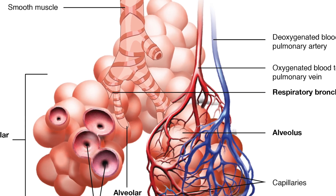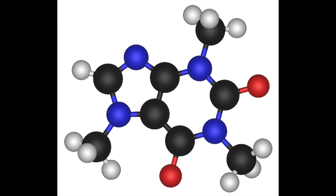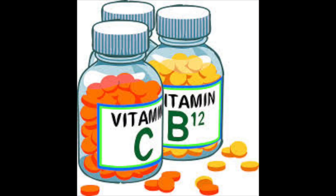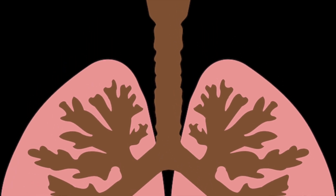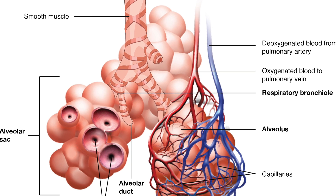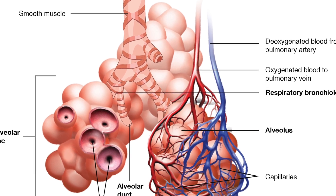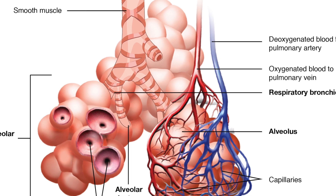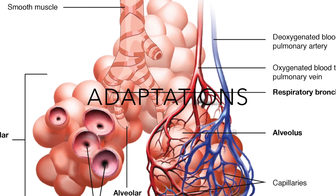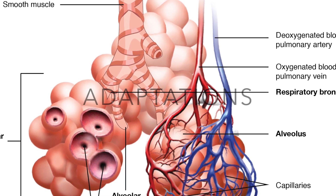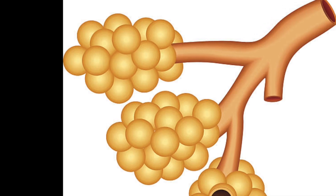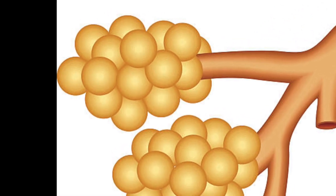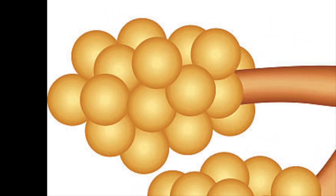Hi guys, this is iMstuck and today we are looking at exchanging materials in the lungs — this is gas exchange — and we will focus on the alveoli. First of all, I'm going to talk about the adaptations for exchanging materials, and firstly one particular adaptation is having a large surface area.